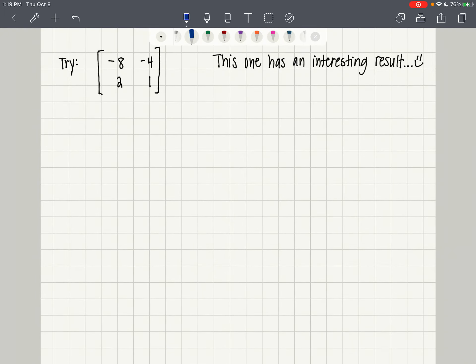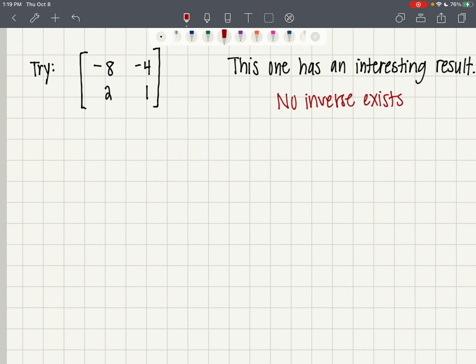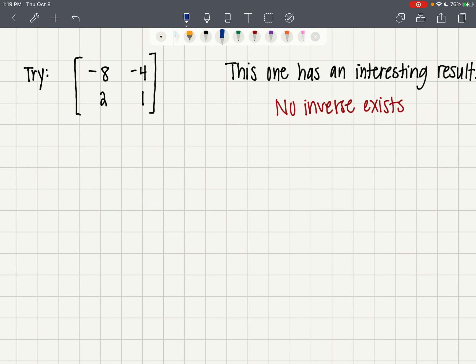Okay, so in the last video I approached this one with it being a try. If you tried it and you got stuck, you're right. The answer to this one is going to be no inverse exists. So there are times when you have a square matrix and it doesn't have an inverse.